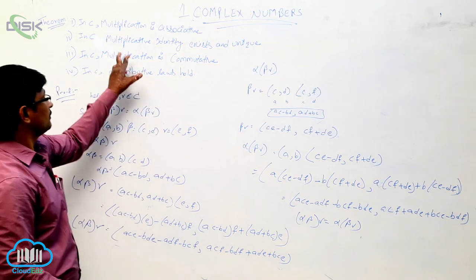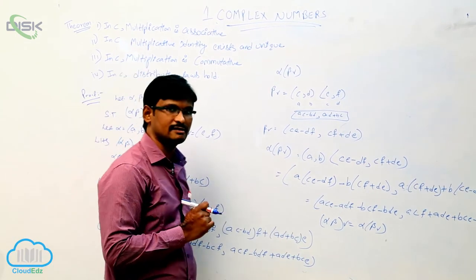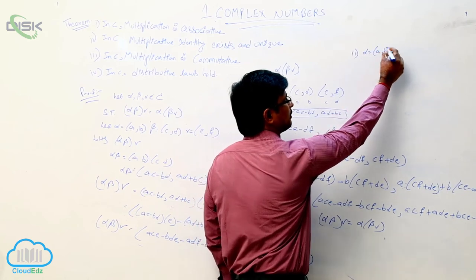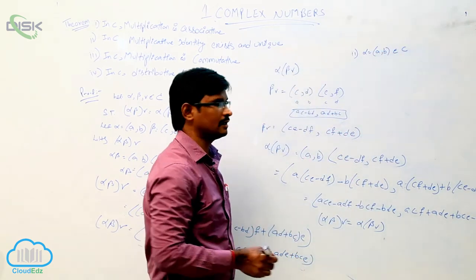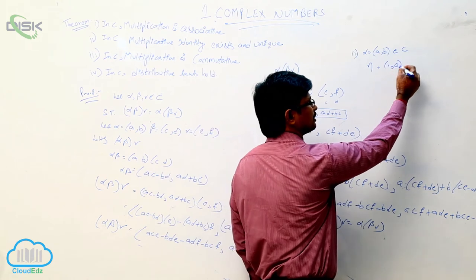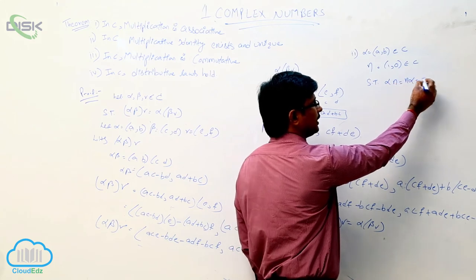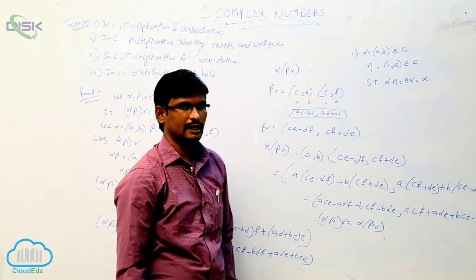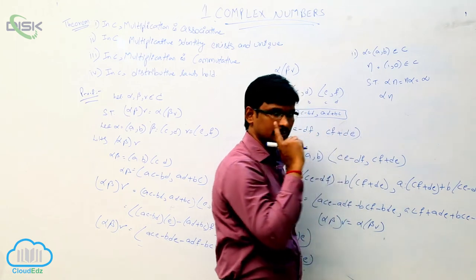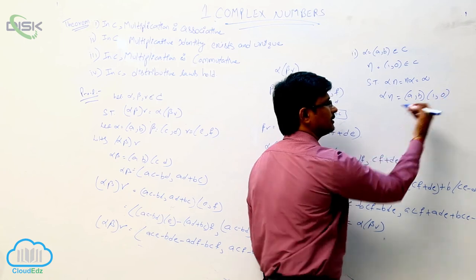Now we have to prove that multiplicative identity exists and is unique. Let alpha equal to (a, b) belonging to the complex numbers, and one number n equal to (1, 0) also belonging to the complex numbers. We have to show that alpha into n equals n into alpha equals alpha. Then we can say that n is the multiplicative identity. So we will find out alpha into n.